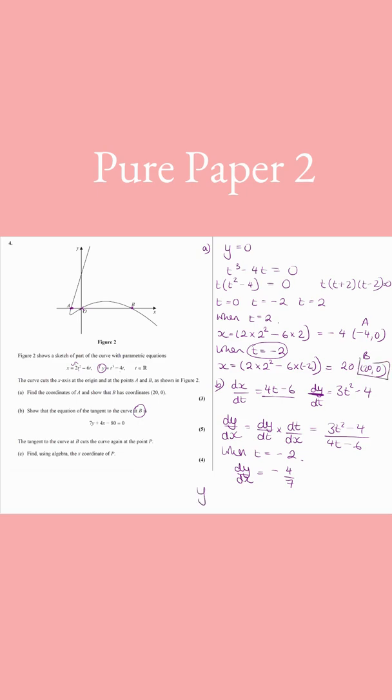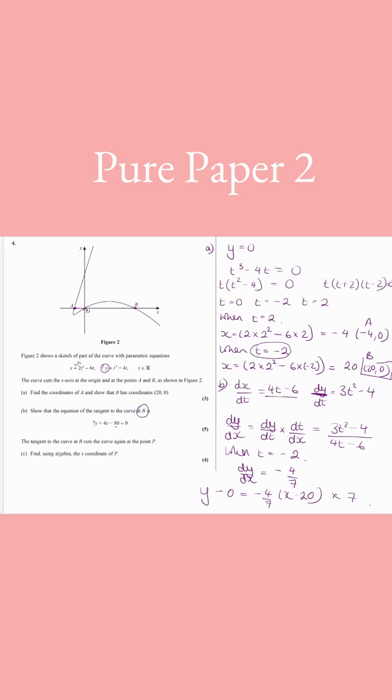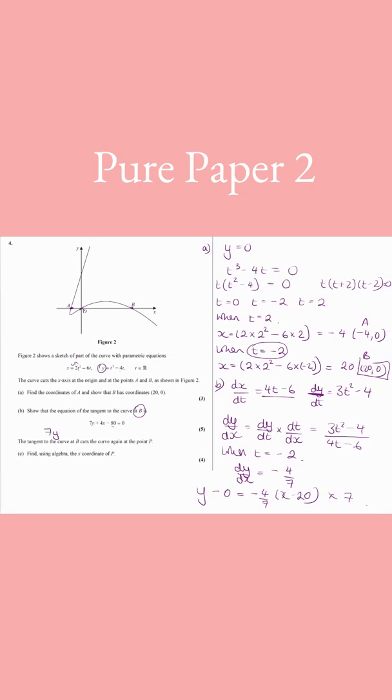And we've got our coordinates at B. So we use y minus y1, which is 0, equals minus 4 sevenths x minus 20. We want it to look like this, so we've got all integers. So I'm going to multiply everything by 7. So it leaves me with 7y, minus the 0 times 7, there's still 0. And then we get minus 4x minus 20. If I was to open that out, I get minus 4x plus 80. Move everything to the left-hand side and you've got the answer.